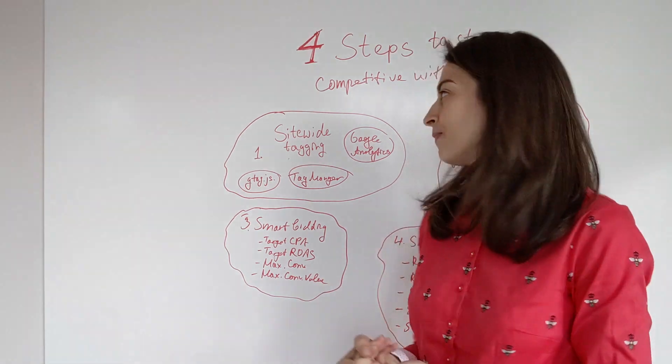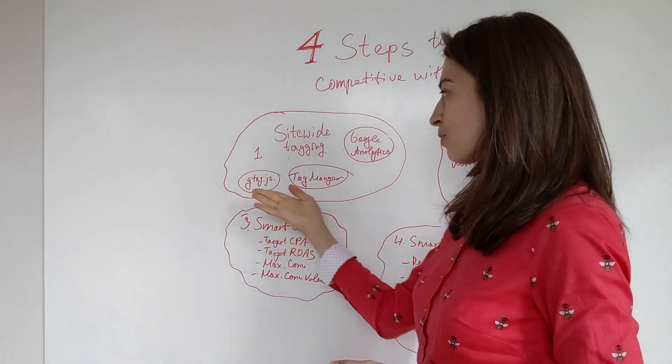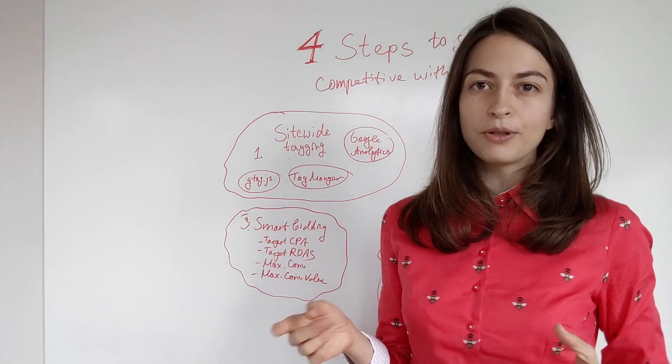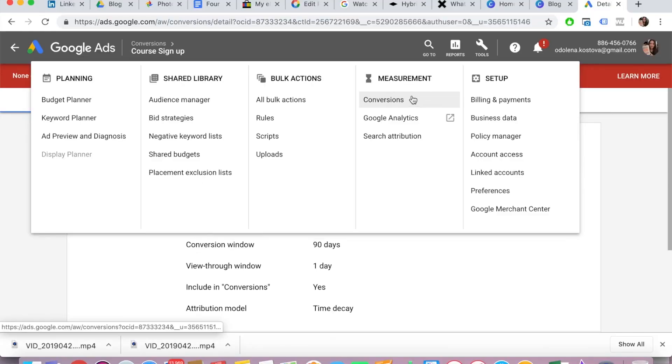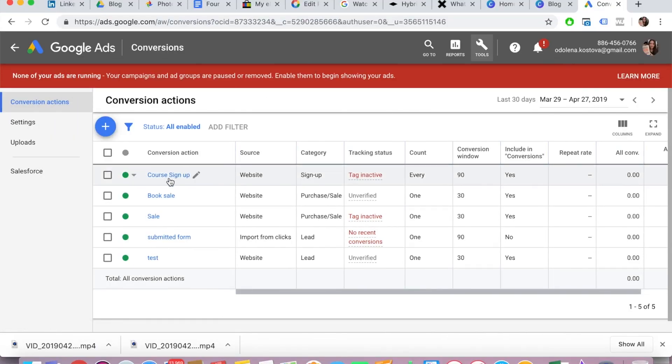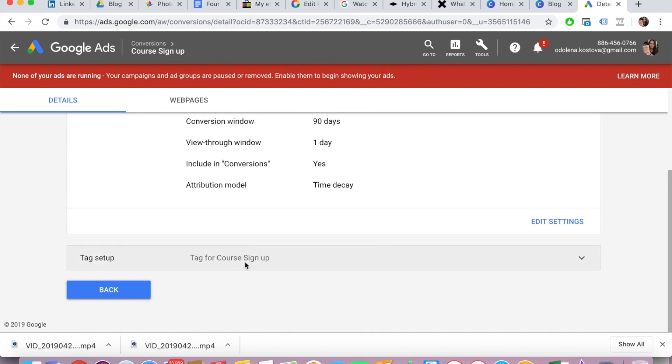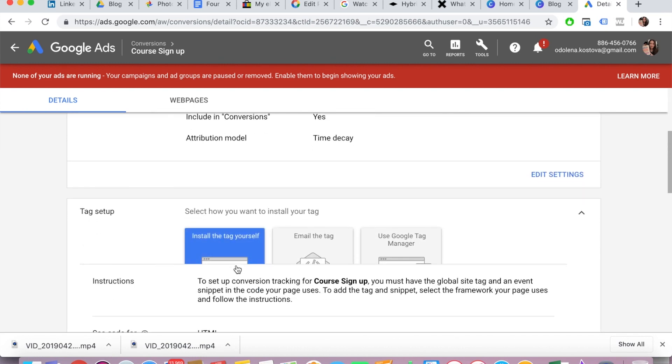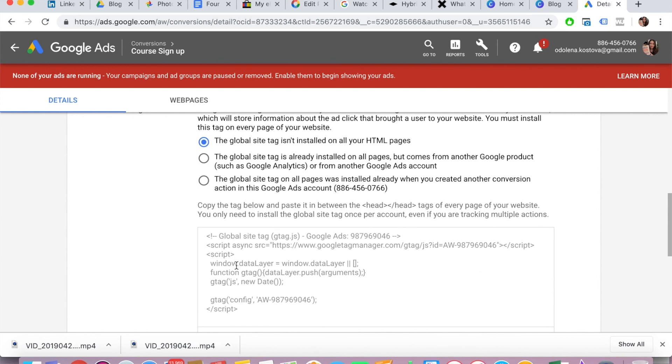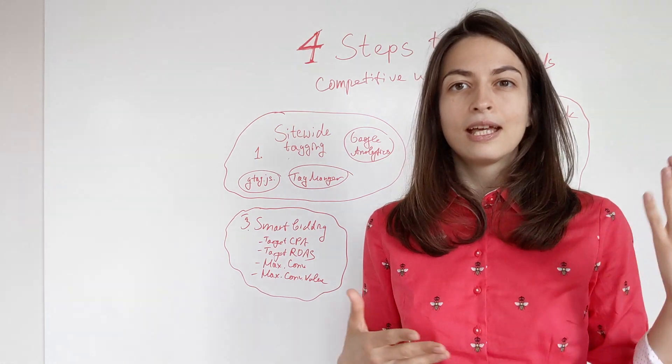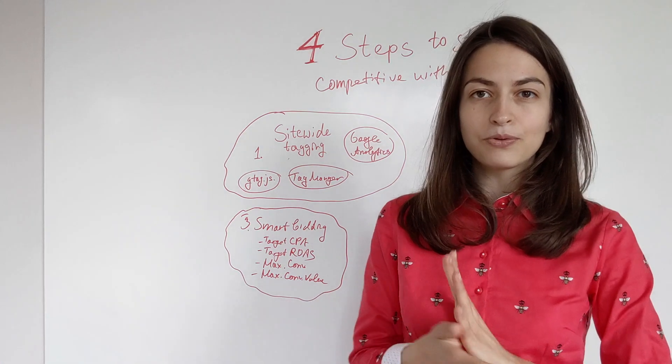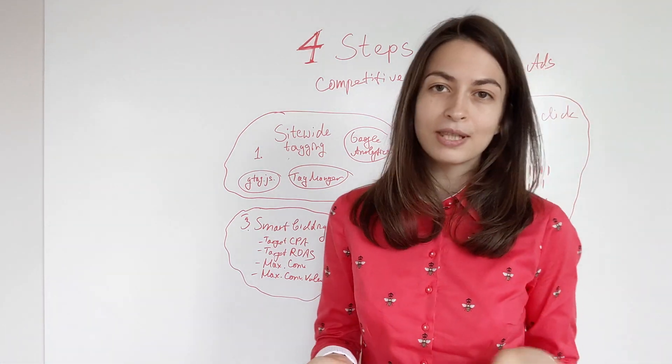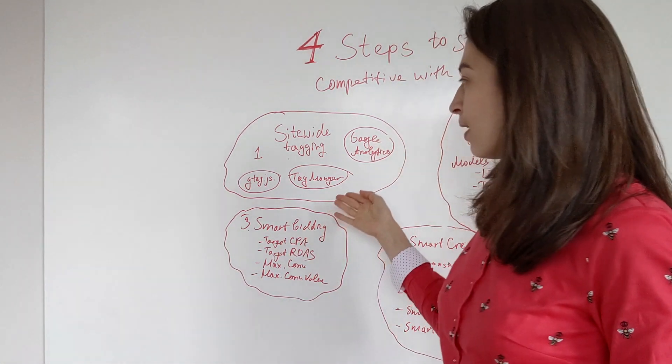For example, the first one is called gtag.js, or global tag. Basically, this is a code that you can get from your Google Ads—I will show you how this works exactly. You basically have to add this code to every page of your website and you will be able to actually track this information. This will turn it into first-party cookies. You will understand you have it as first-party information and you'll be able to see all the interactions on your website, even on Safari browsers.